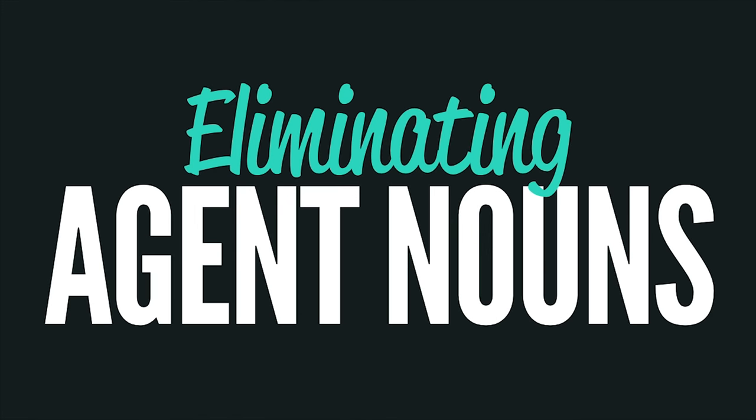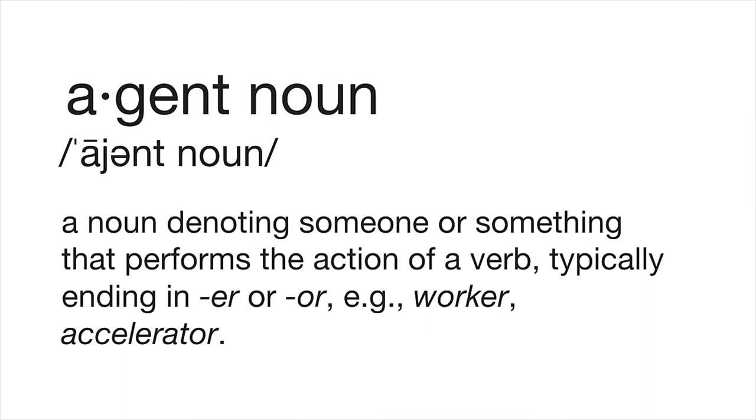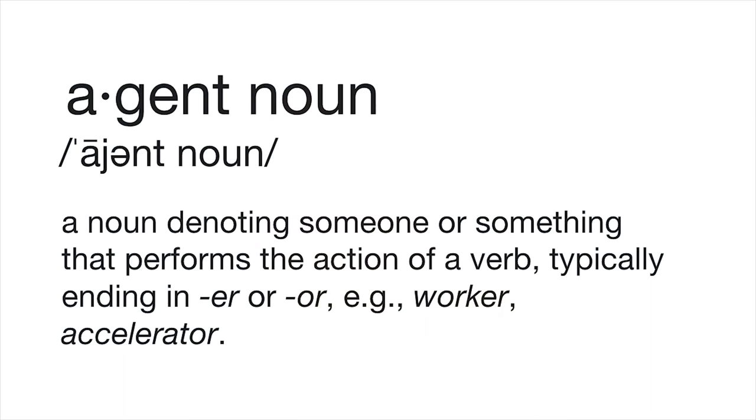So what is an agent noun? An agent noun is a term I discovered on the internet that perfectly describes what I wanted to talk about. An agent noun is a noun denoting someone or something that performs the action of a verb, typically ending in 'er'. So 'driver' might be the agent noun for 'drive', 'worker' might be the agent noun for 'work', or 'splitter' might be the agent noun for 'split'. Let's look at some real code and see how we can apply some of this stuff.